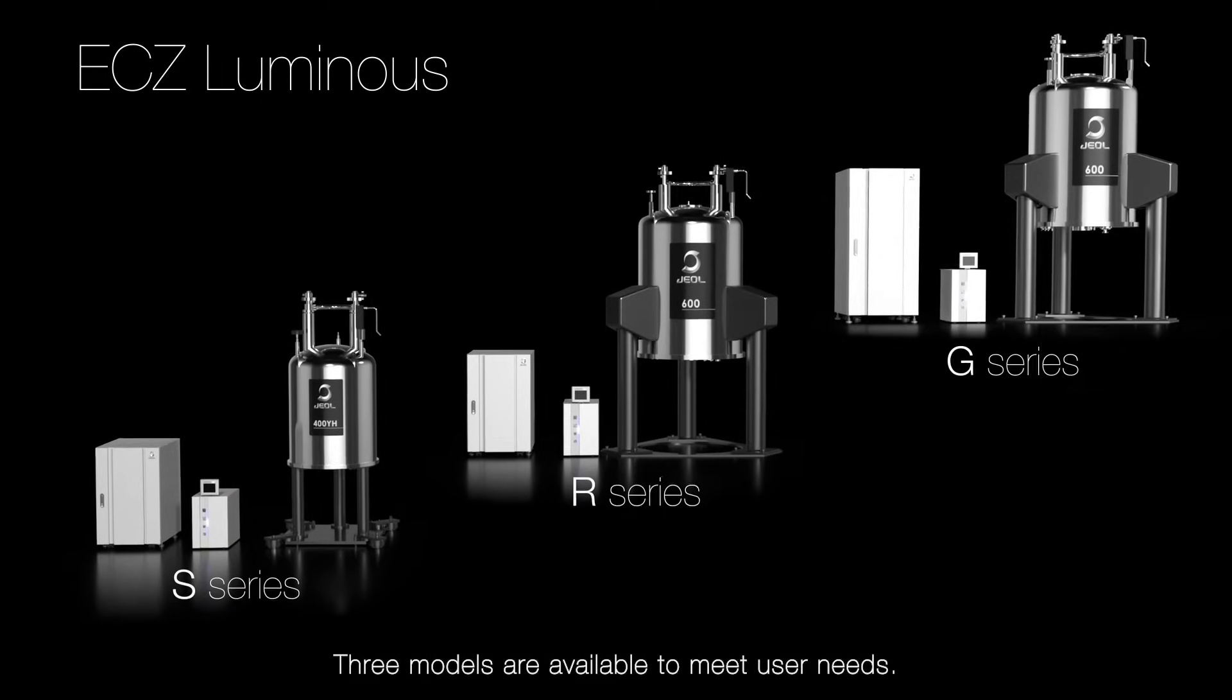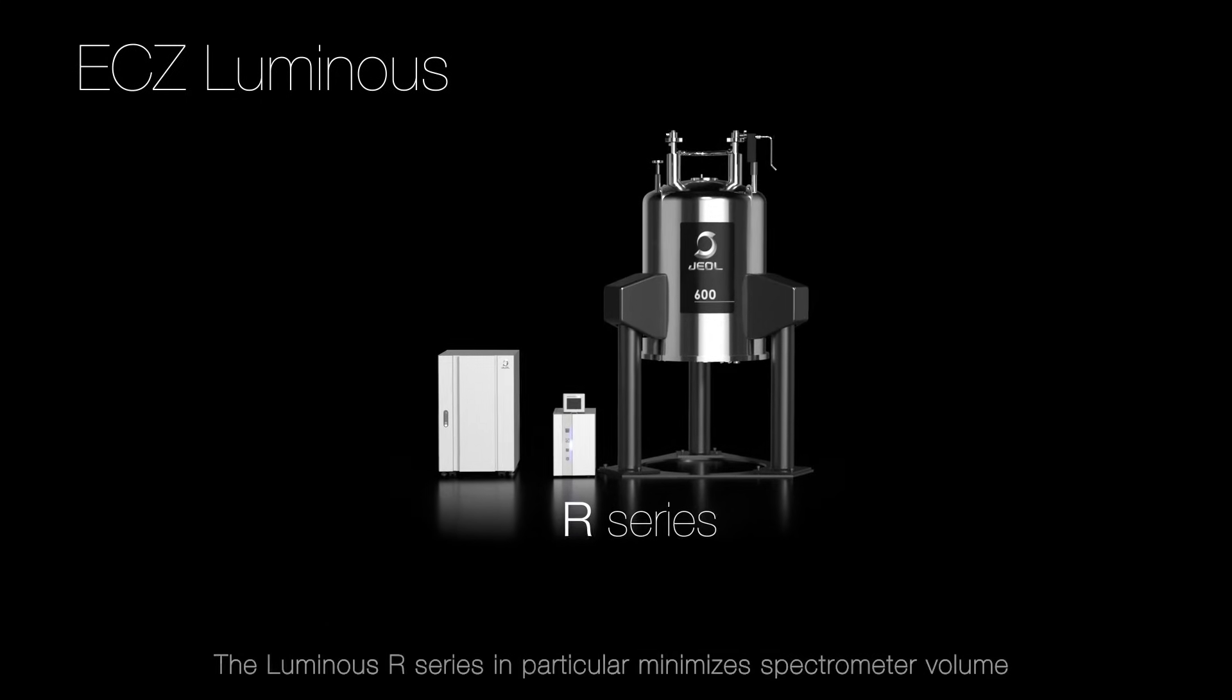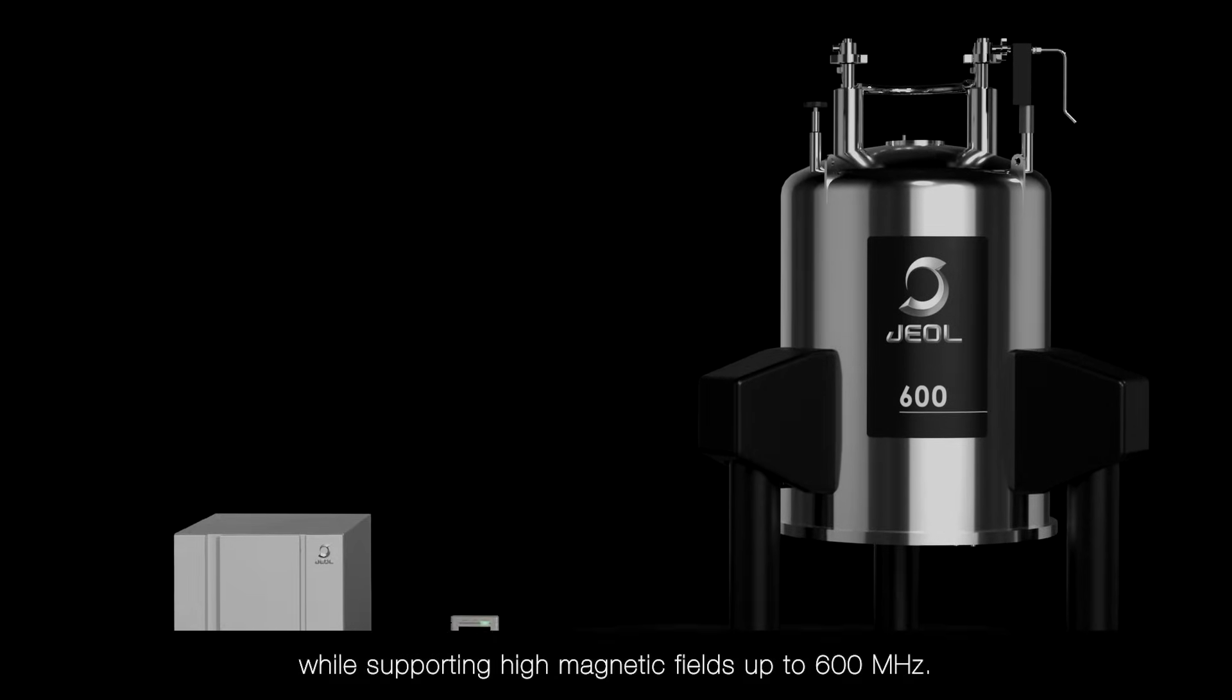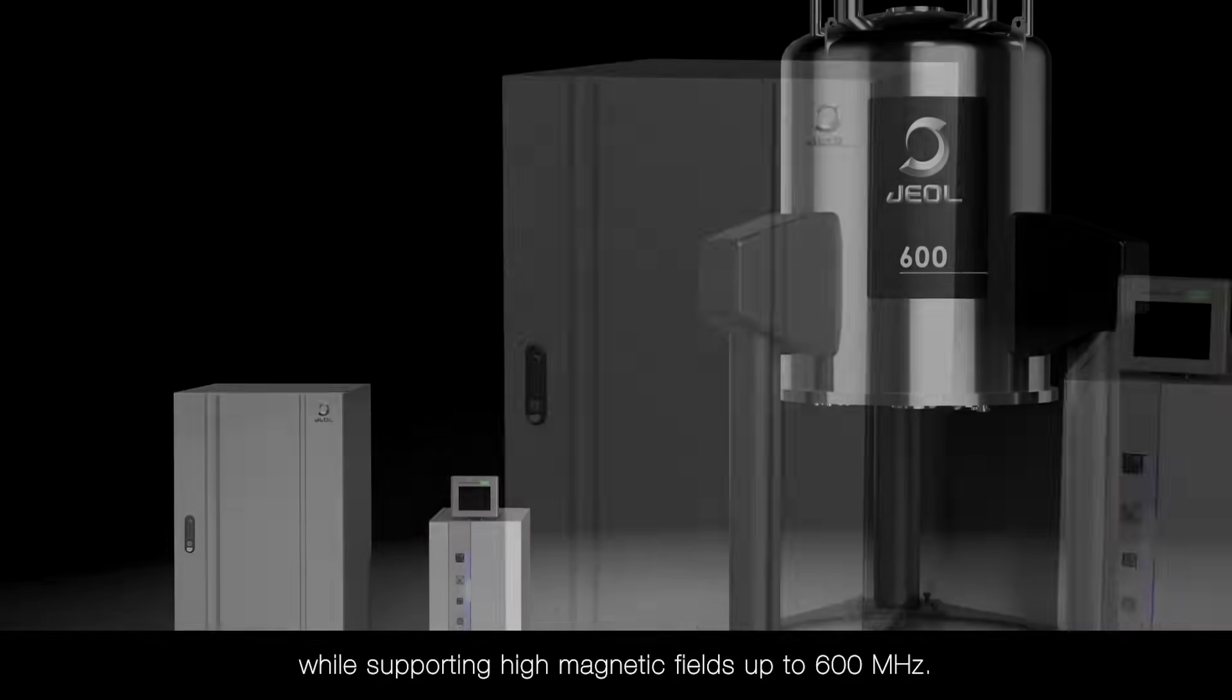Three models are available to meet user needs. The Luminous R series, in particular, minimizes spectrometer volume while supporting high magnetic fields up to 600 MHz.